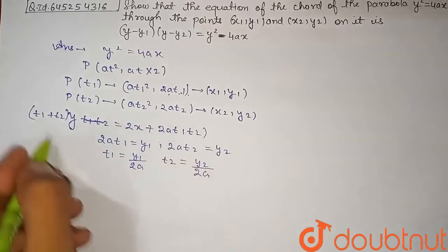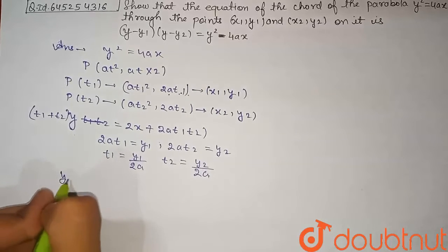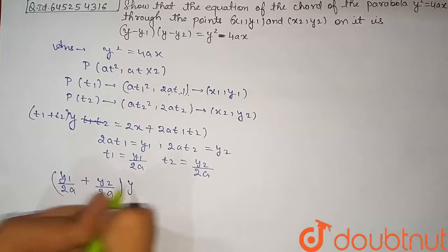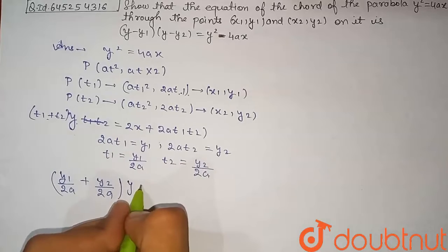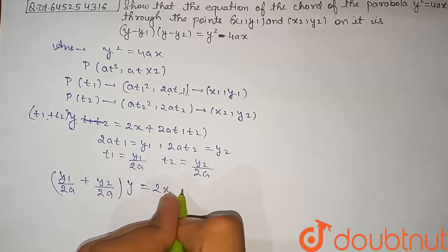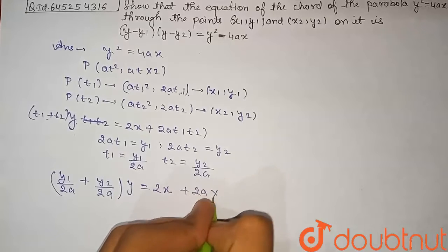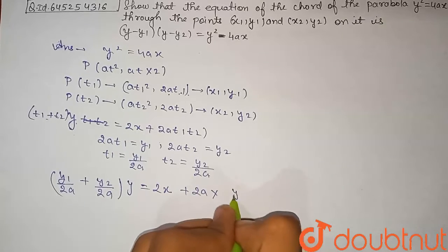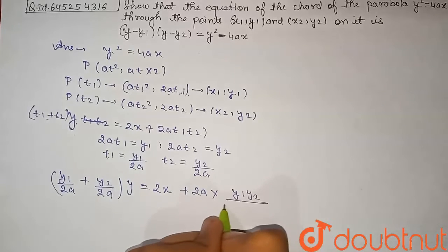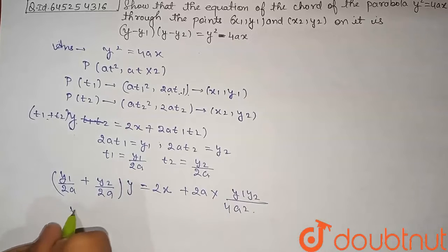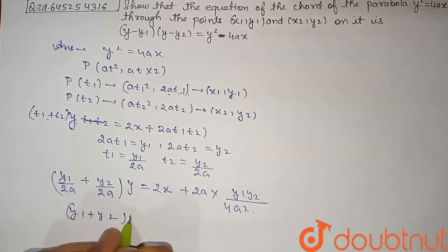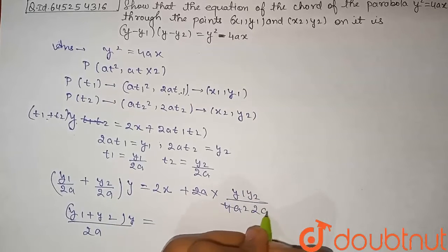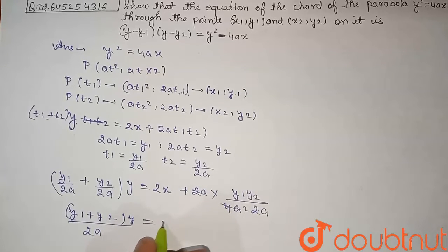Substituting t1 = y1/(2a) and t2 = y2/(2a) into the chord equation, the term y(t1 + t2) becomes y·(y1 + y2)/(2a), equal to 2x plus 2a·t1·t2. The product t1·t2 = y1·y2/(4a²). Cancelling 2a with 4a² leaves y(y1 + y2)/(2a) = 2x + y1·y2/(2a).